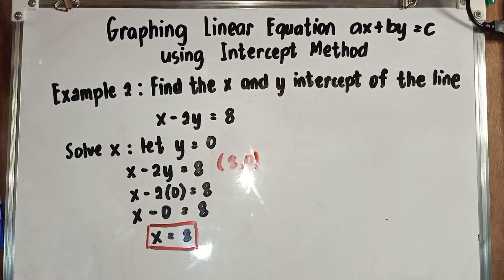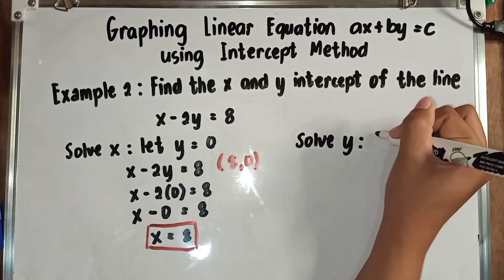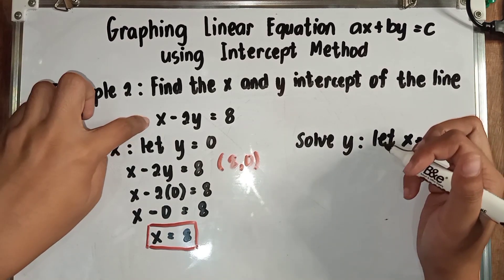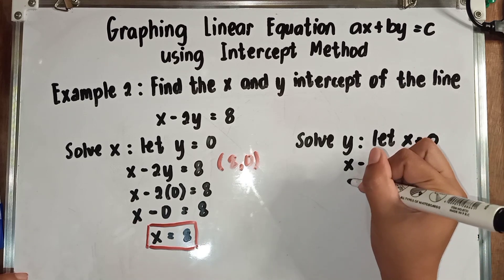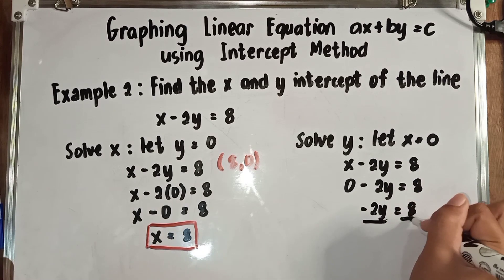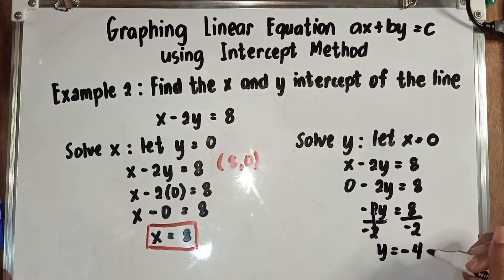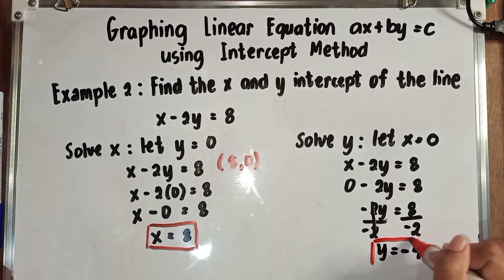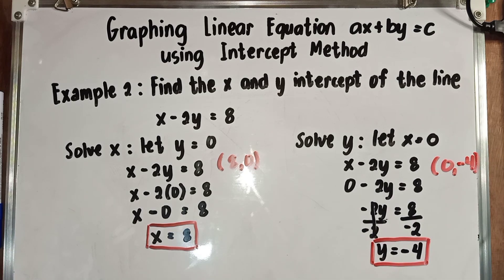We already found the first ordered pair. Now let's proceed to the second step: solve for Y and let X equal to 0. Copy the equation: X minus 2Y is equal to 8. Let X equal to 0: 0 minus 2Y is equal to 8. Bring down negative 2Y is equal to 8. To isolate Y, divide both sides by negative 2. The negative 2 cancels, and Y is equal to 8 divided by negative 2, which gives us negative 4. Our Y is negative 4, so our second ordered pair is (0, negative 4). Our two ordered pairs are (8, 0) and (0, negative 4).